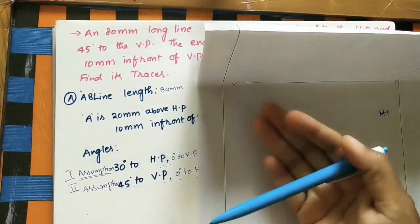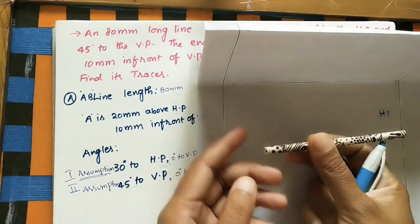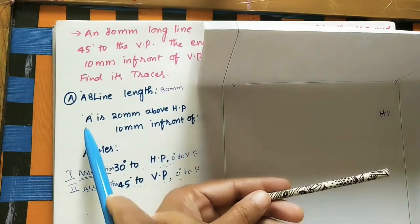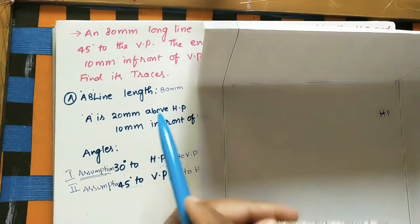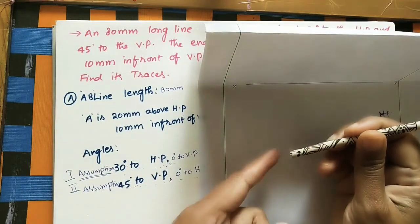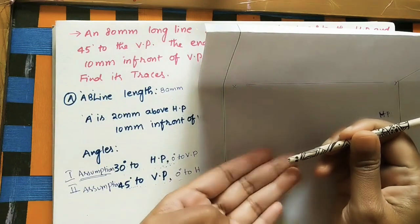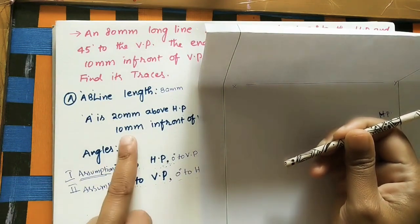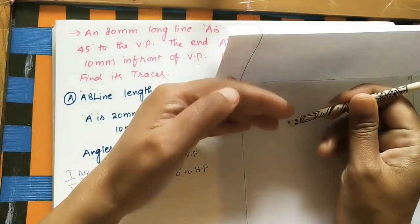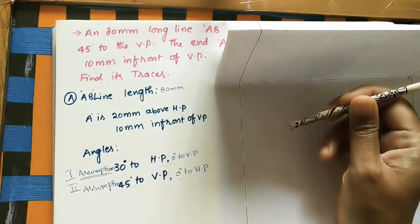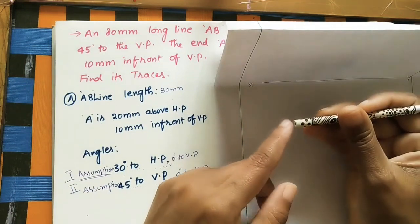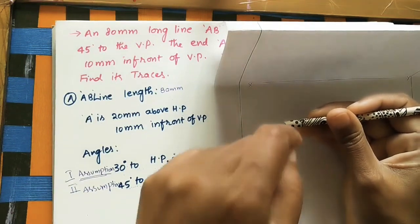For our convenience, keep this in the first quadrant. This is point A, point B, and the line length is 8 cm. First, we need to mark position A. Point A is 20 mm above the horizontal plane and 10 mm in front of the VP. Mark the front view of A and the top view of A.